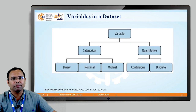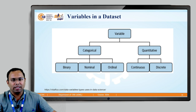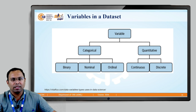Let us get started. We will first understand the different types of variables that are present in a dataset. A variable — in a previous video I showed you a table which was a glimpse of a dataset. A dataset is nothing but a table. In a table there are two things: rows and columns. In a dataset, a row is called a record, whereas a column is called a variable — in other words, it is also called a feature.